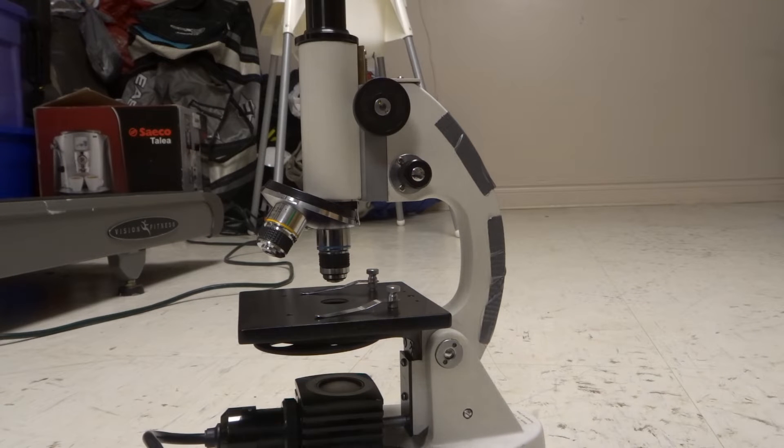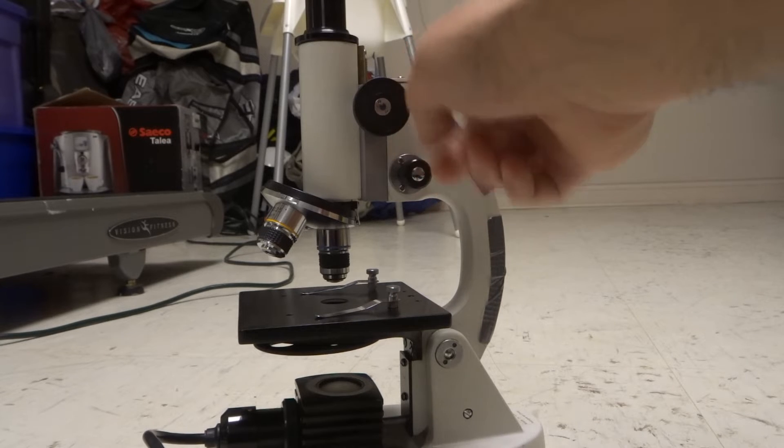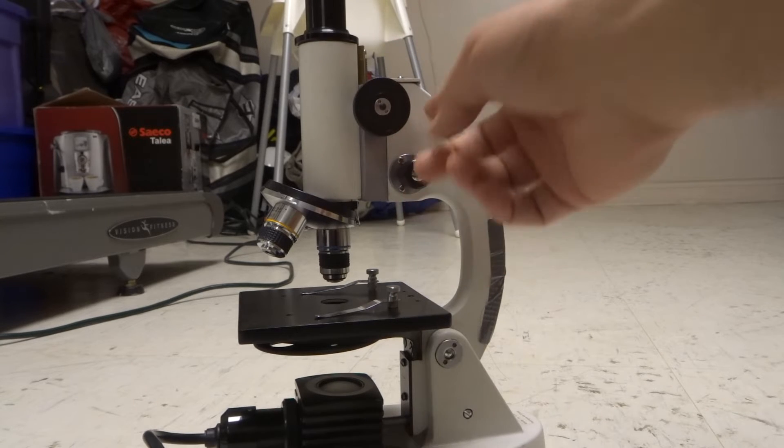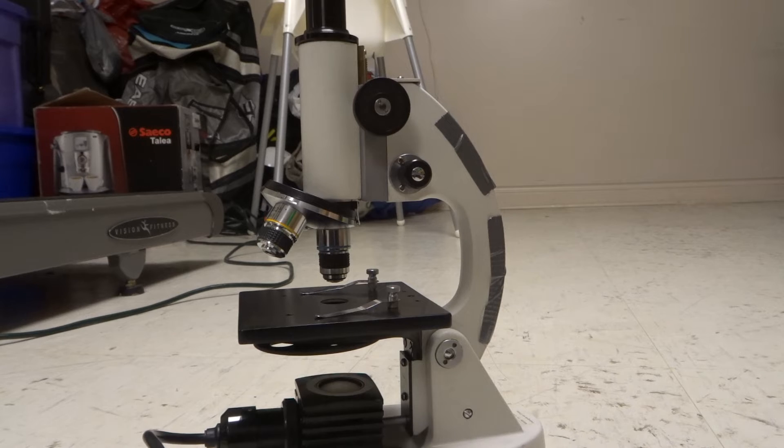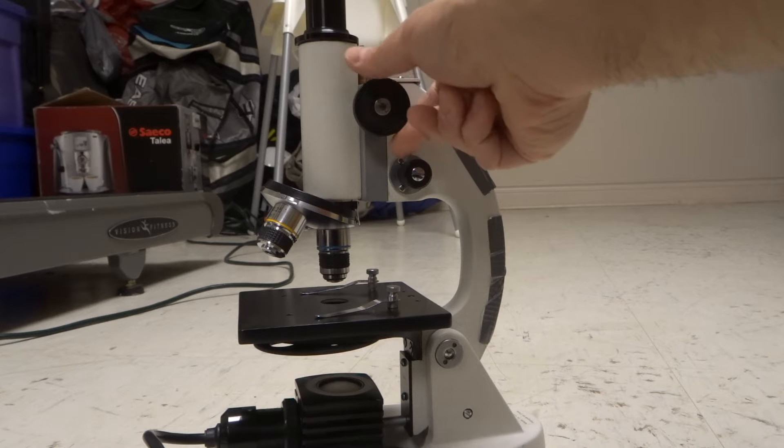The next thing that you want to do is observe the two knobs that you likely have on the microscope. They might be on the same axis or they might be like this on separate axes as you can see right here. Now one of them is going to be a coarse adjustment knob and one of them is going to be a fine adjustment knob. The coarse adjustment knob, when you turn it, it will move the microscope tube drastically.